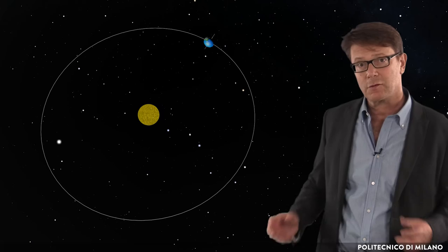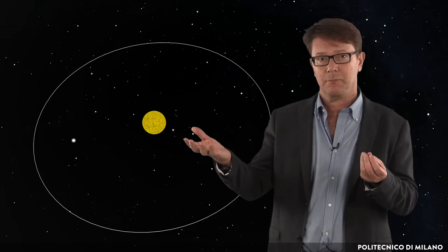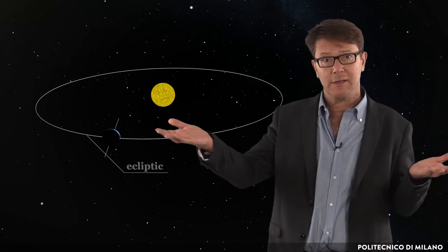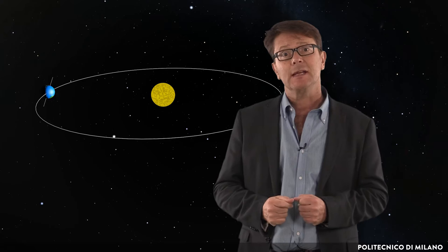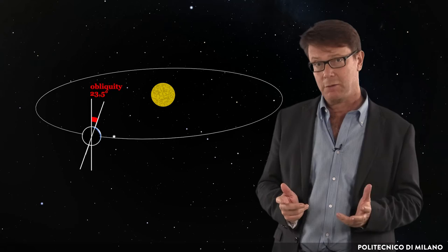The center of mass of our planet moves on an ellipse, with the Sun located in one focus. The plane which contains the Sun and the orbit of the Earth is called the ecliptic. The Earth's axis is not perpendicular to the ecliptic, but is inclined by 23 degrees and a half. This angle is called obliquity.